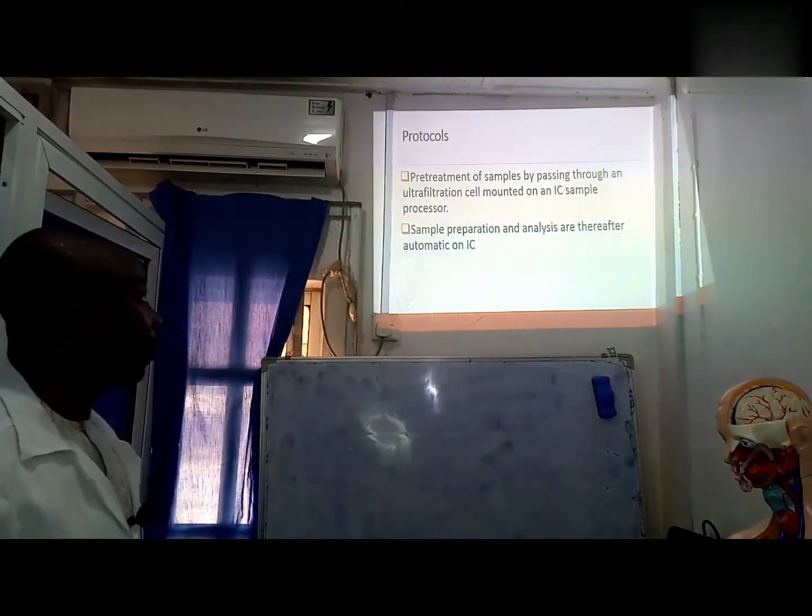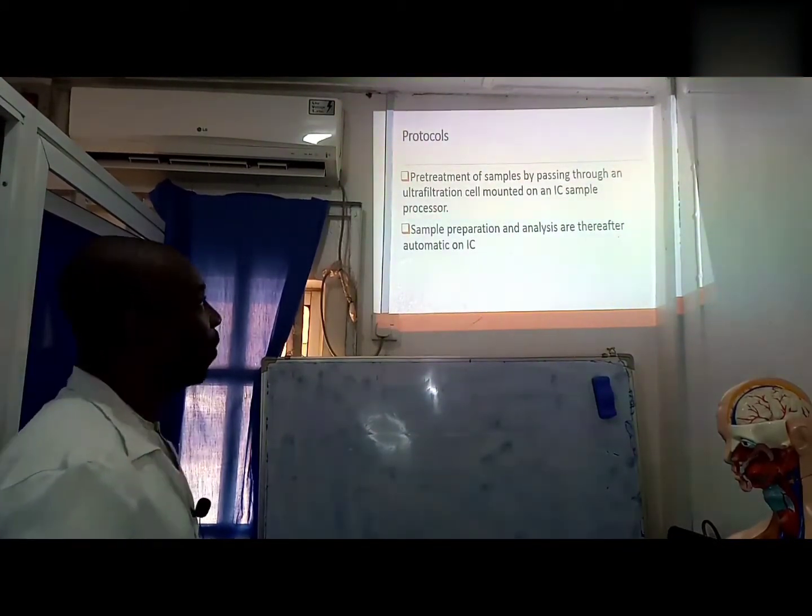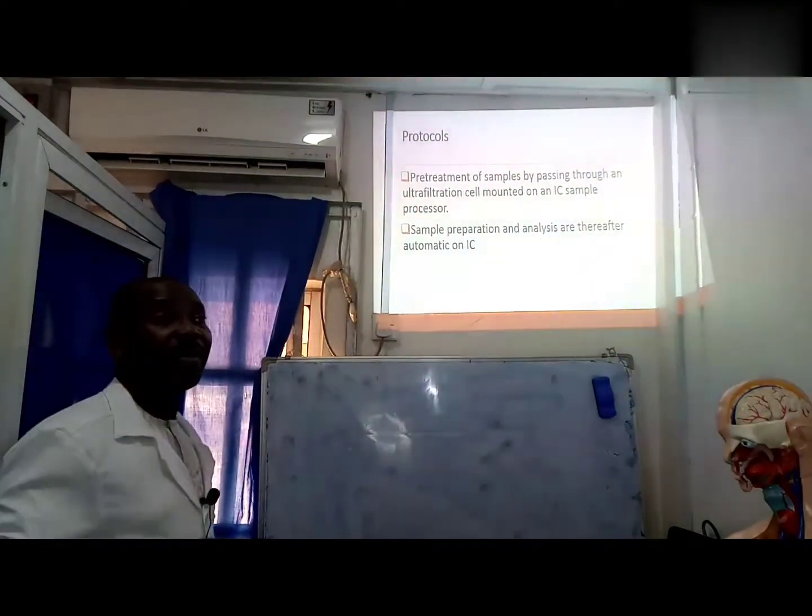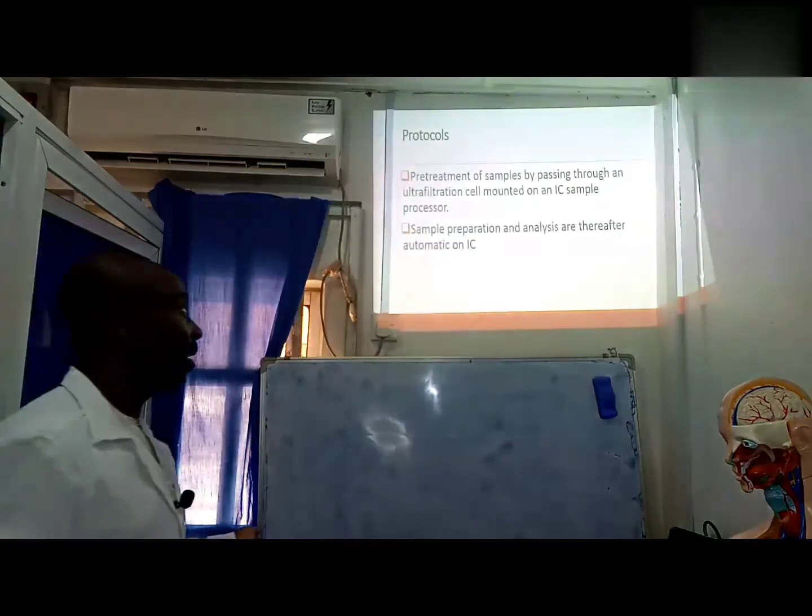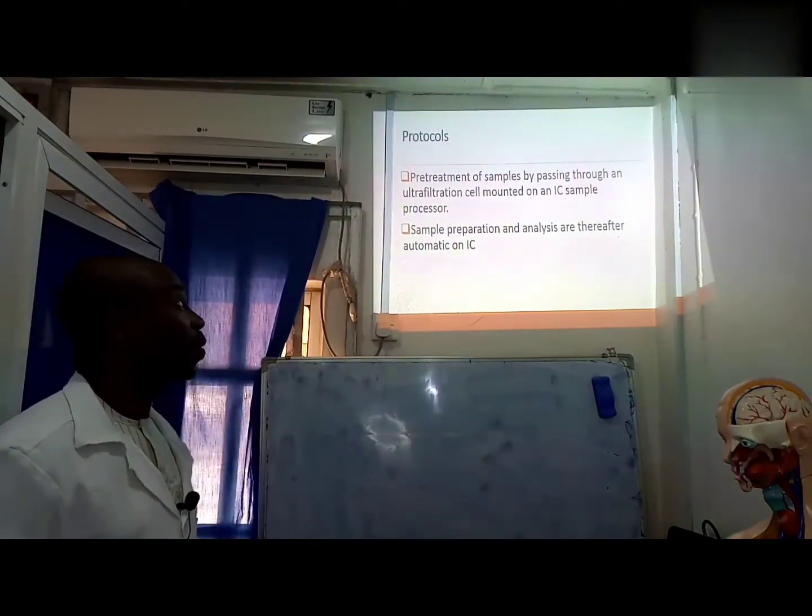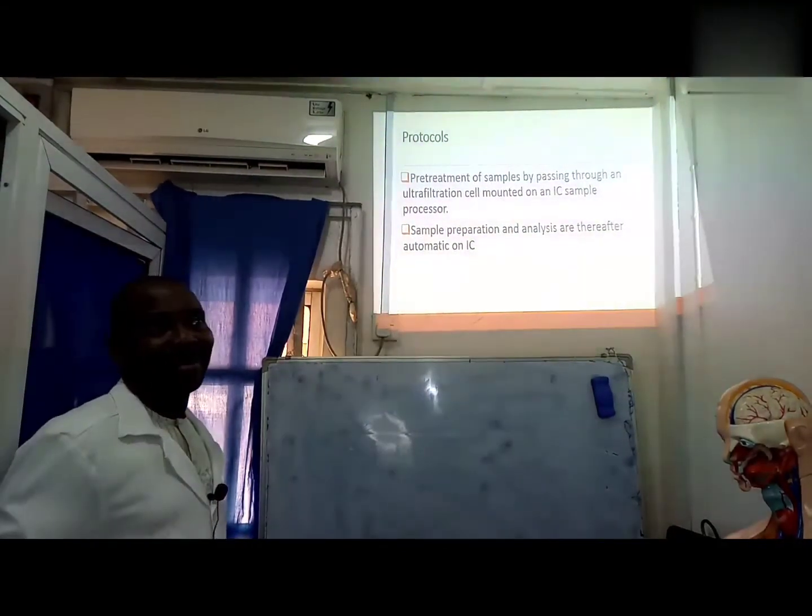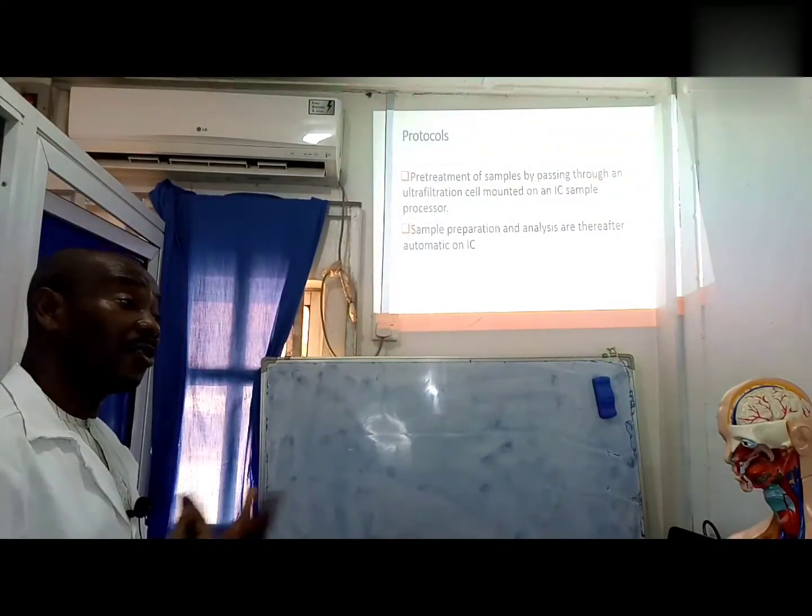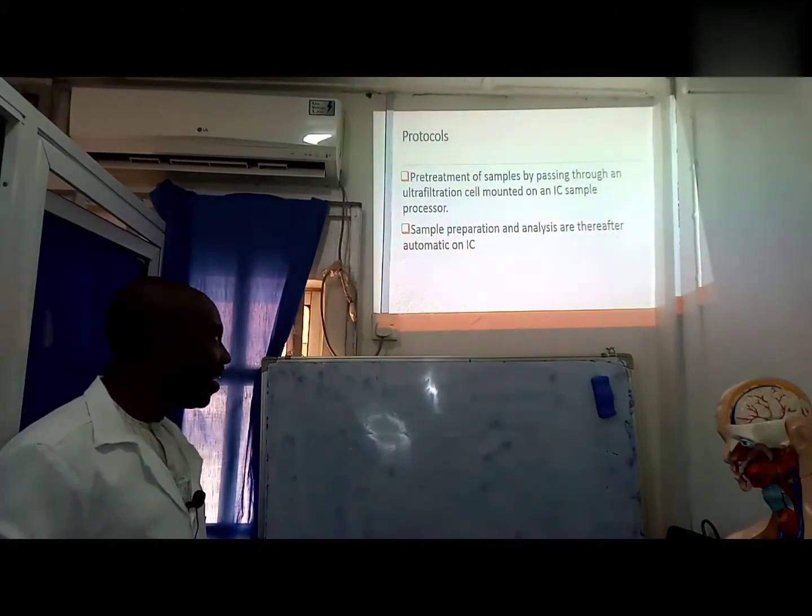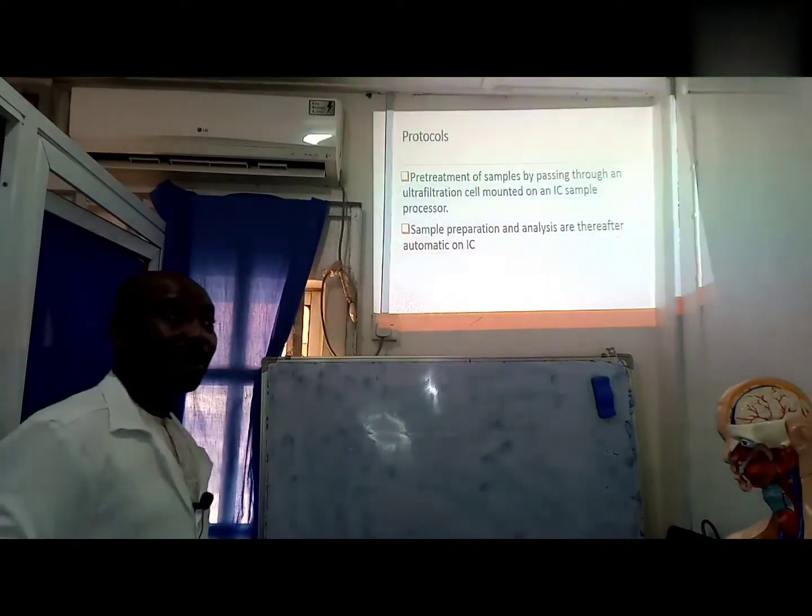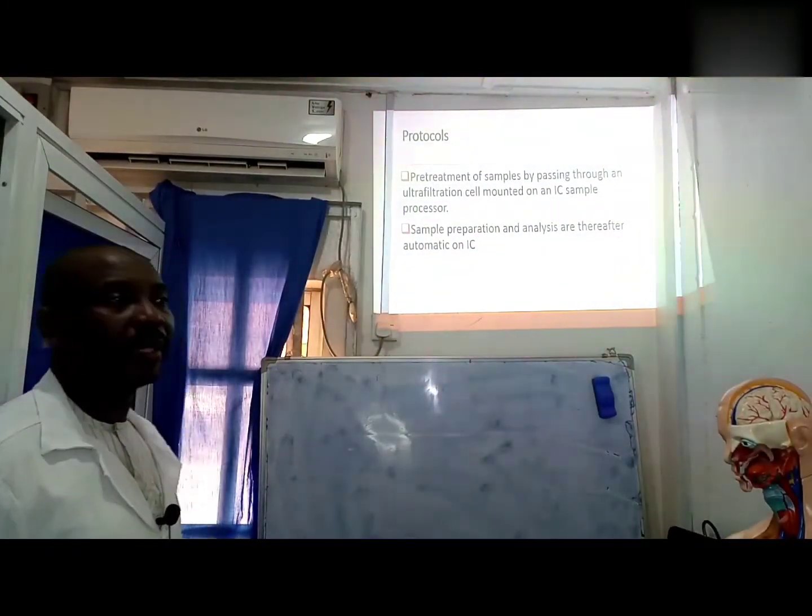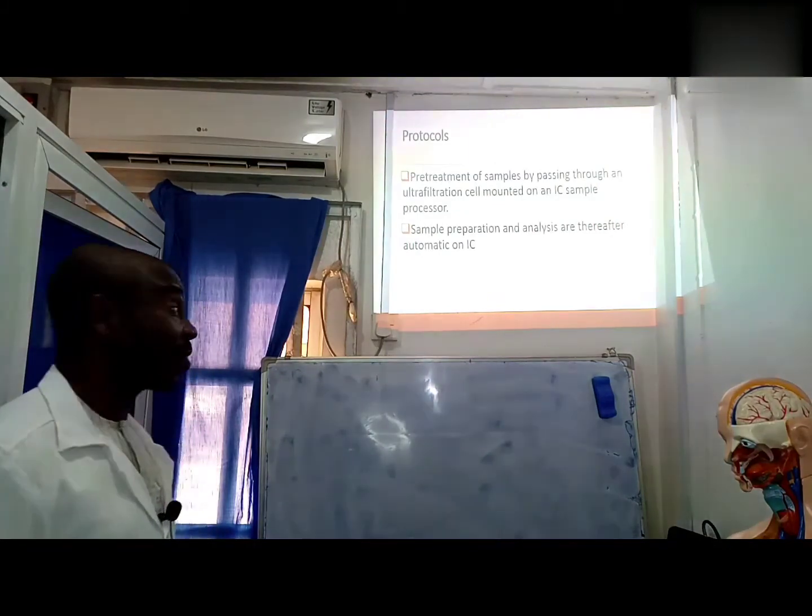Pre-treatment of samples by passing through an ultra-filtration cell mounted on an IC sample is a must, and this protocol and procedure needs some technical know-how. The way we treat the samples before we pass them into the ion chromatographic system is what guarantees and drives the results that we get ultimately. Sample preparation and analysis are therefore for many ICs automatic. The truth is that to get such automated IC systems, it takes a lot of money, thousands of dollars.